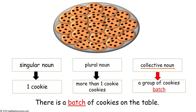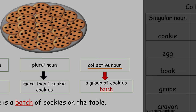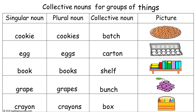Now kids will work on collective nouns for things. A singular noun is one cookie, plural noun is cookies, and the collective noun — meaning a group of cookies — is a batch. There is a batch of cookies on the table. The collective noun for cookies is batch, for eggs is carton, for books is shelf, for grapes is bunch, and for crayons is box.